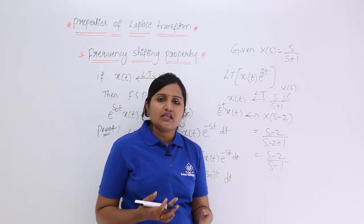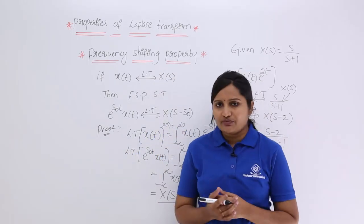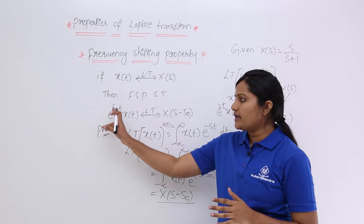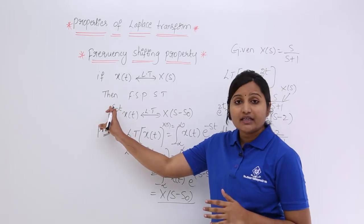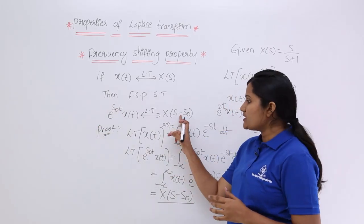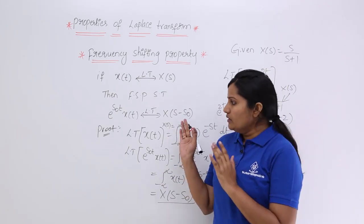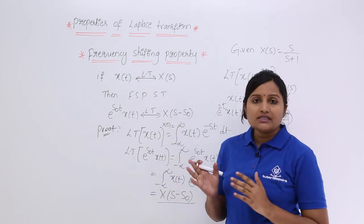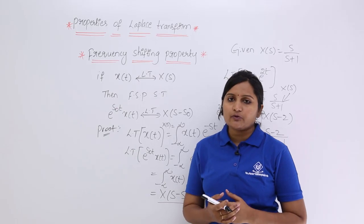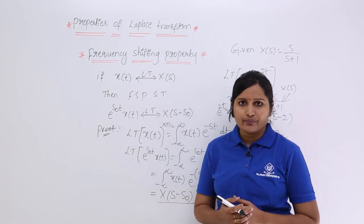Like this, we can solve different problems using the frequency shifting property. One thing to keep in mind: if they give e^(-s₀t) instead, you simply take X(s + s₀). The rest is the same. This is the frequency shifting property in Laplace transforms.